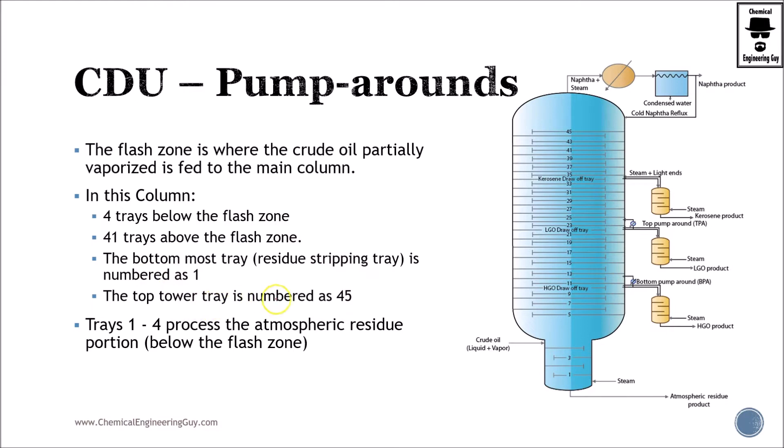The top tower is number 45, trays number one to four. Residue portion. So right here you will encounter most of the atmospheric residue, which you already know. This will go to some heat exchanging network and then to the vacuum unit.